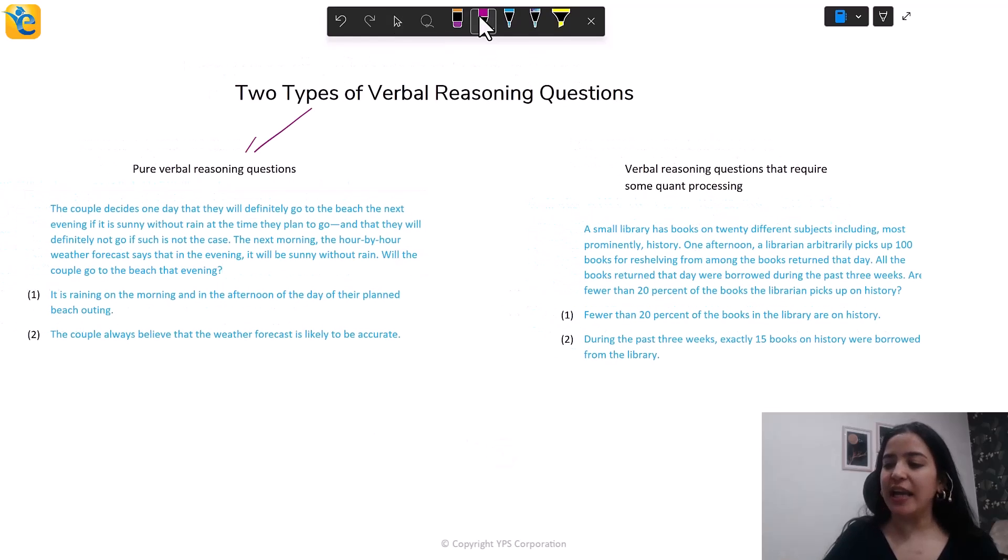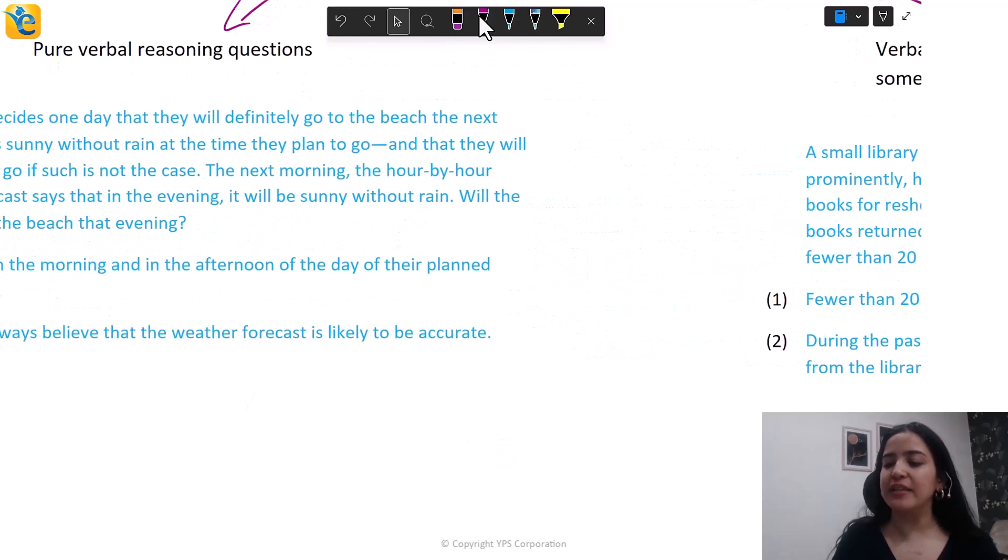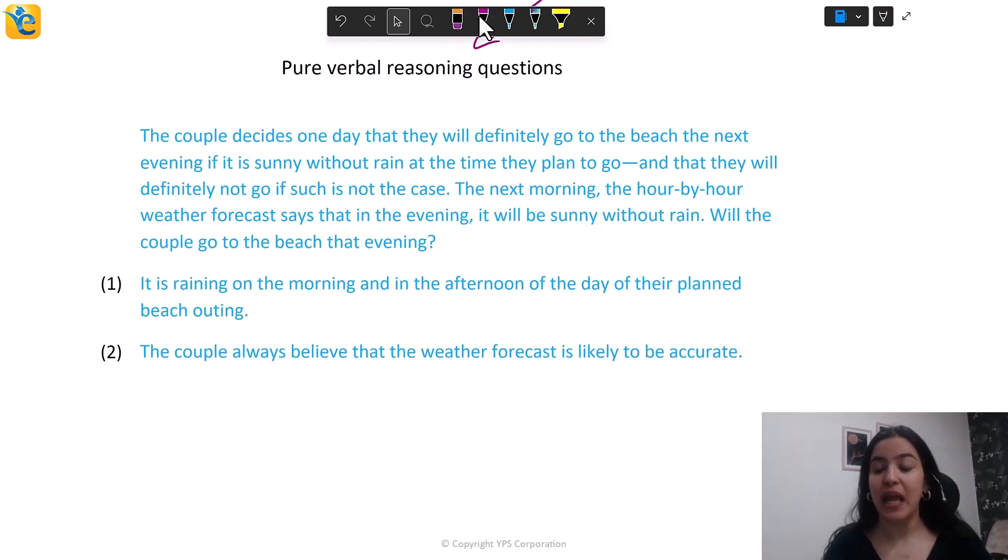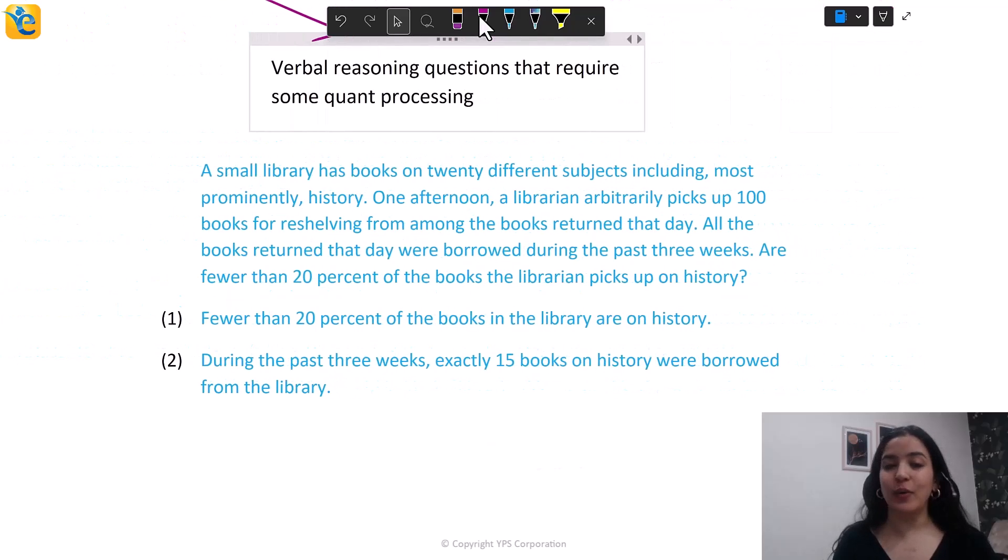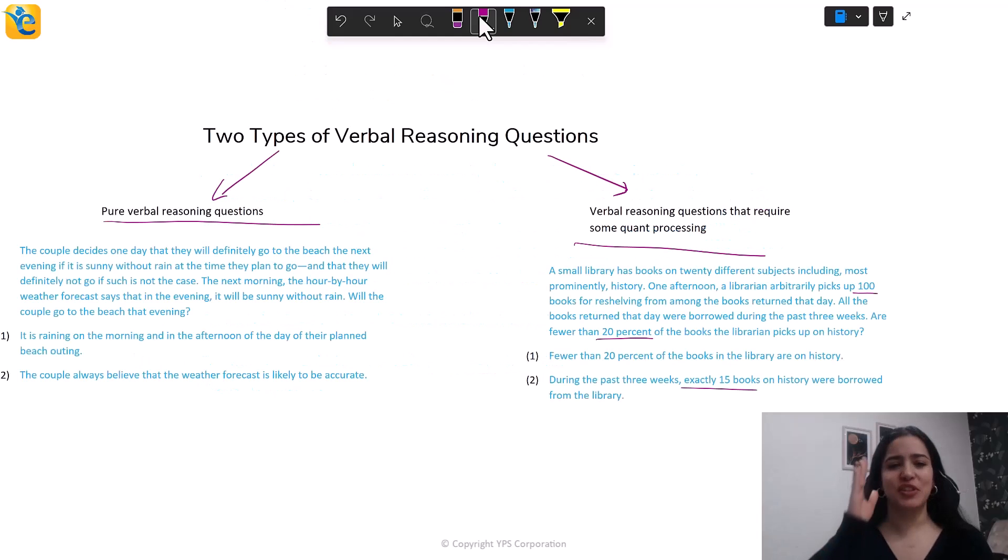First type is this, where you have pure verbal reasoning questions and this has nothing from Quant. It's just purely what you learn in verbal. The second type is verbal reasoning questions only, but these do require some Quant processing. Something from Quant is going to come here. Now, to really explain what this difference is, I'm going to show you two official examples. Here is each type. And first, let's only look at this one, the pure verbal reasoning question. Now, when you see this question, you see it's all words, it's just text. And when you pause and read, you will realize it doesn't have any math, any Quant going anywhere. But here in this second question, there are numbers here, you have 100 books and then 20% and 15 books and this and that you can just see and decide. And that's the difference between the two question types.